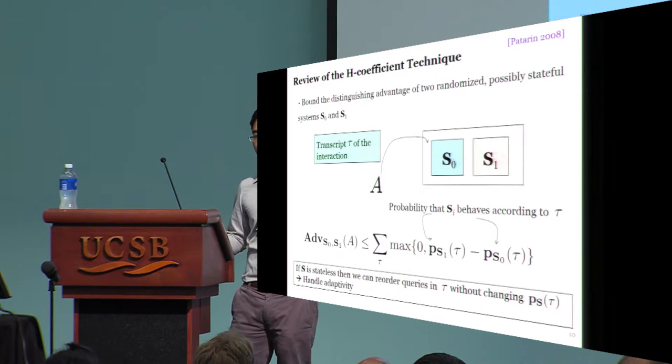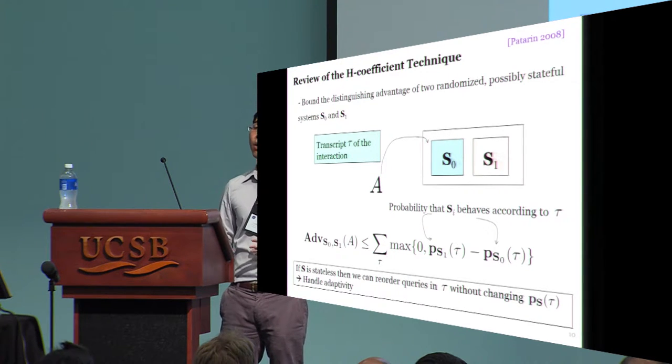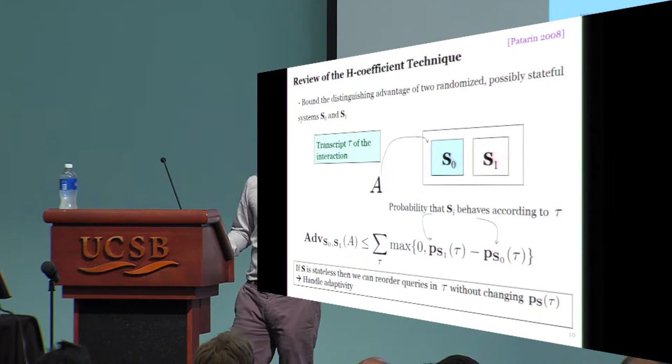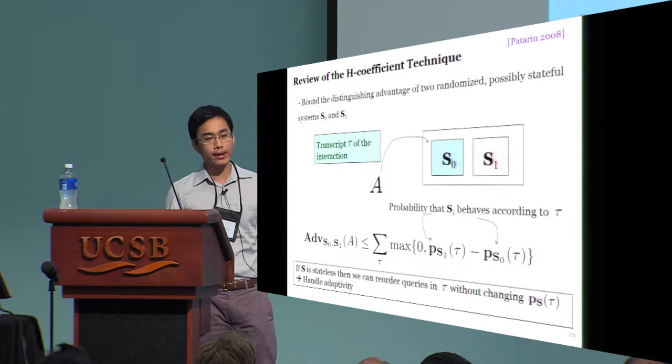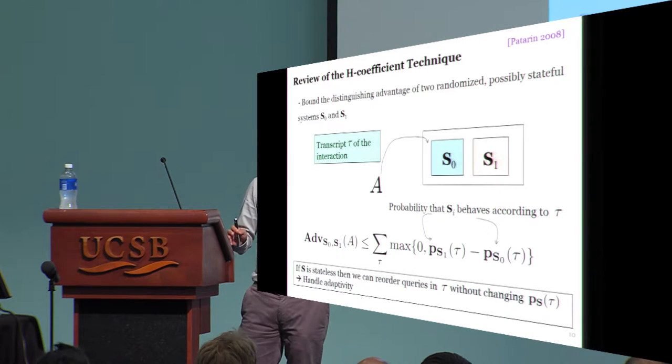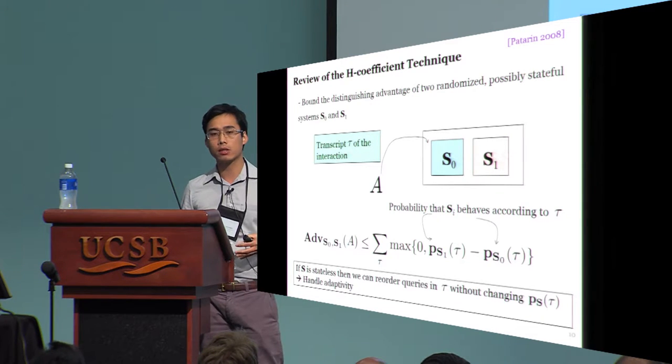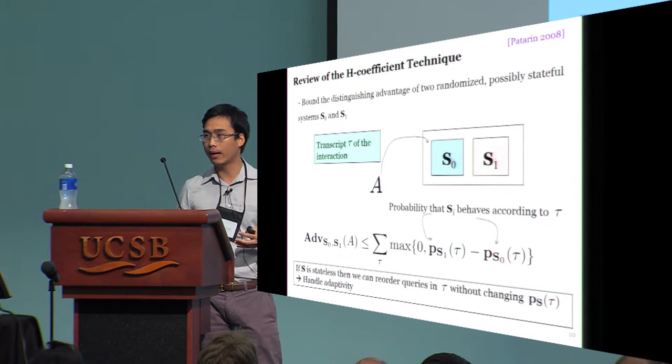Often, we only deal with stateless systems, such as a block cipher. In that case, we can rearrange the order of the queries in a transcript without affecting the probability that the system produces that transcript. This is why the H-coefficient technique is so powerful in handling adaptivity.